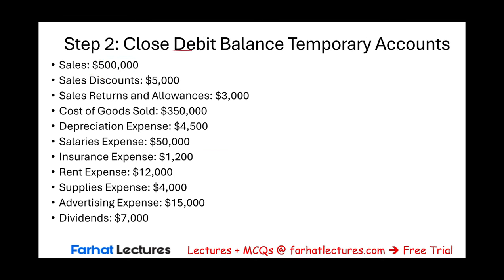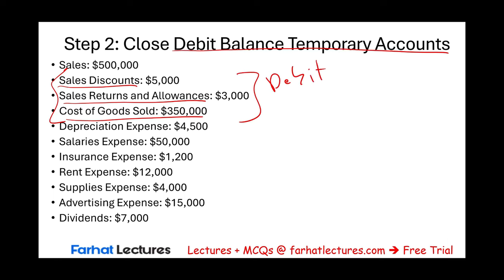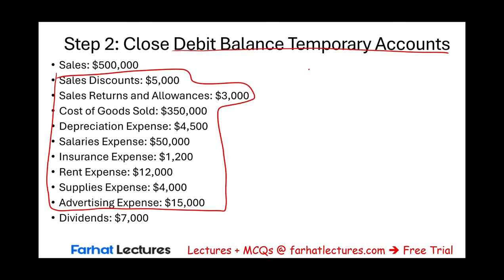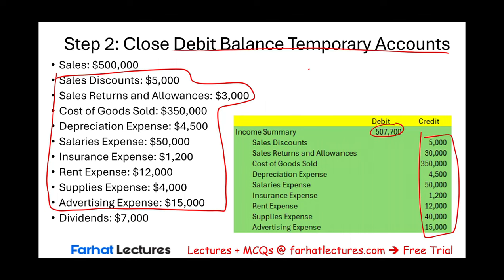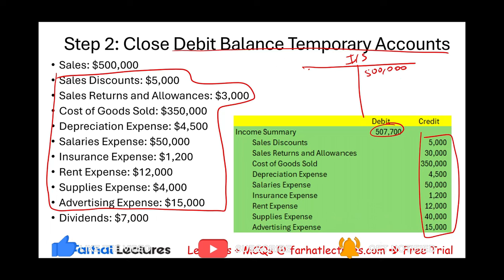Step two — close debit balance temporary accounts. In this session, we introduced sales discount, sales returns and allowances, and cost of goods sold, which will also have debit balances. Sales discount is closed with expenses. You can close them all in one shot as you are closing your expenses. Therefore, sales discount, sales returns and allowances, and all of those are closed at once by crediting those accounts and debiting the total to income summary. In income summary, we had 500,000 from step one, and now we have 507,700 from step two.